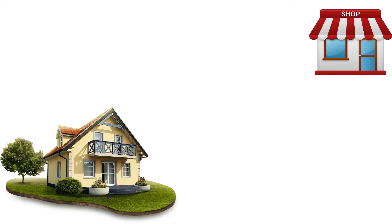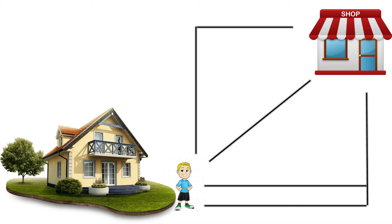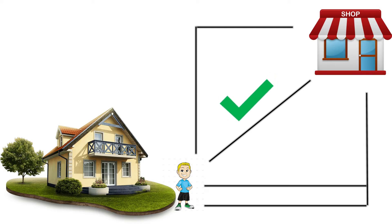Let's go back to John's analogy to understand this scenario better. Consider John has left the house to purchase vegetables and he sees four different routes that can lead him to the vegetable shop. Out of the four routes, one route is of much less distance compared to the others. So John is going to choose this route since it is correct and efficient as it covers the least distance. Similarly, when choosing an algorithm, programmers look into correctness and efficiency and choose the one that best fits their need. That's how an algorithm is chosen.